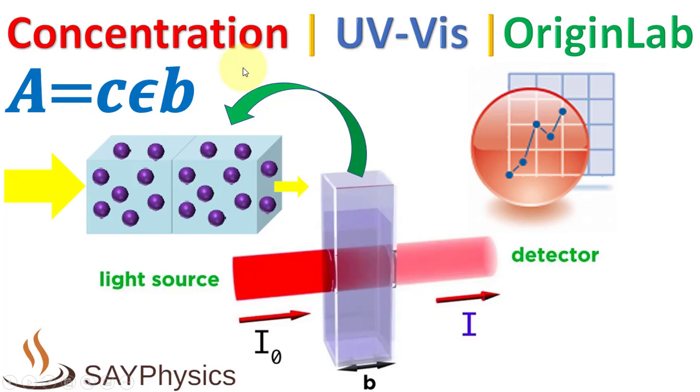In this video, we will discuss how to estimate the concentration of a substance in a solution from UV-Vis absorbance data using Beer-Lambert's law or a calibration curve in Origin. There are two ways to know about the concentration of a substance in a solution from their absorption data.